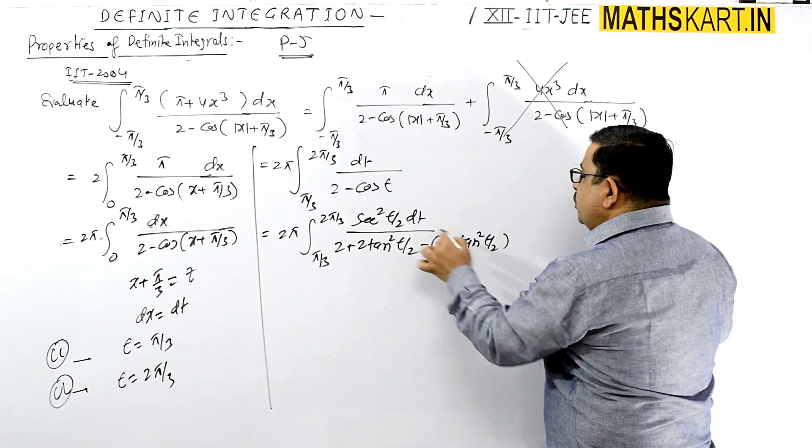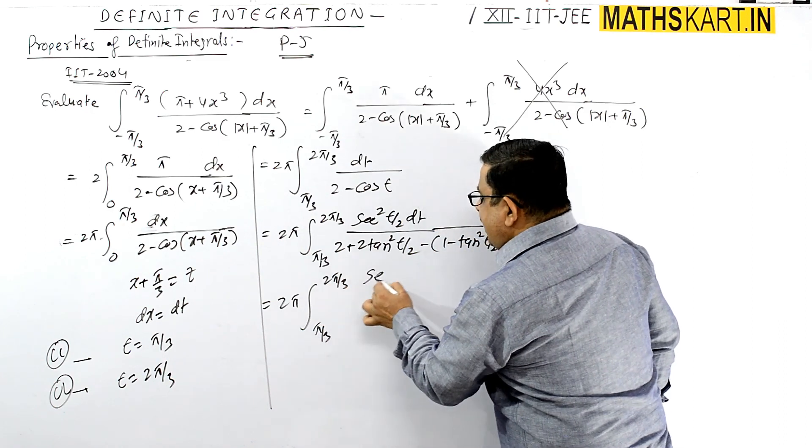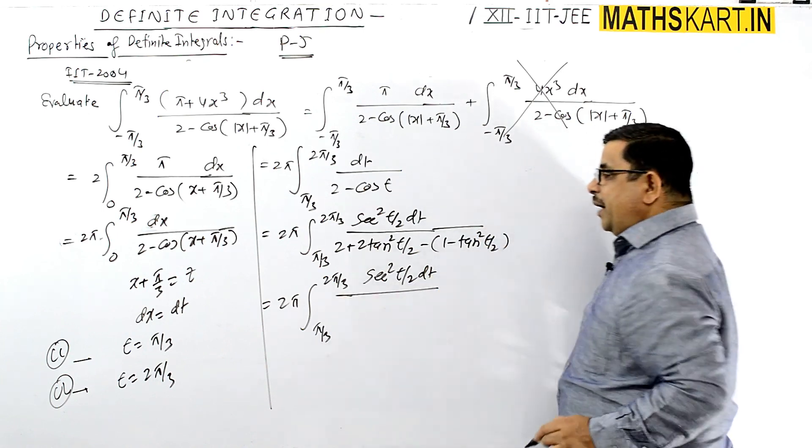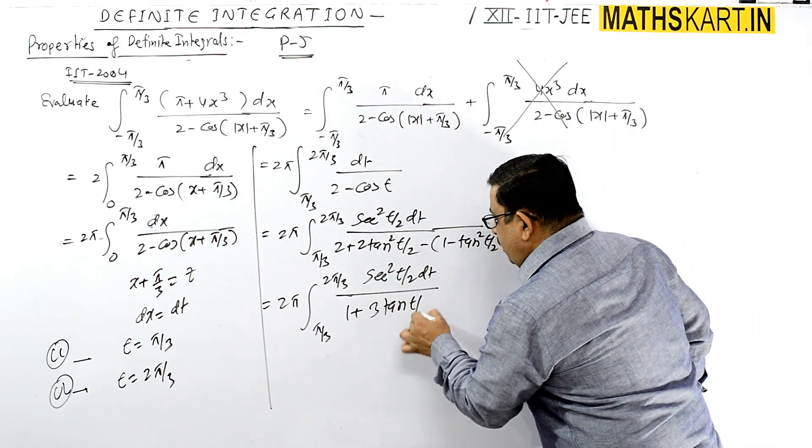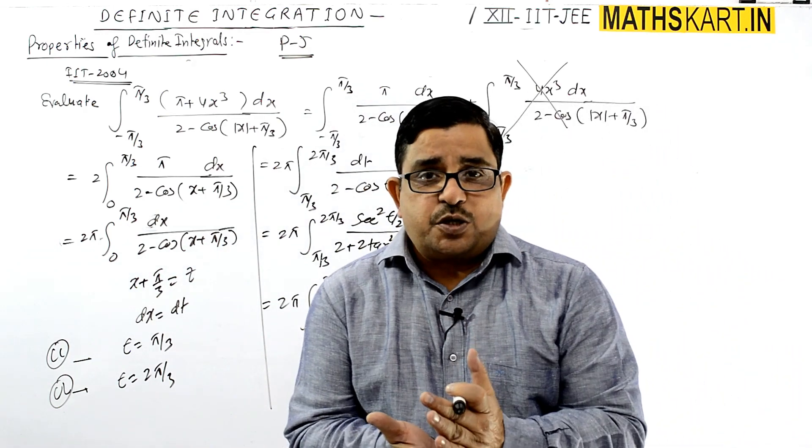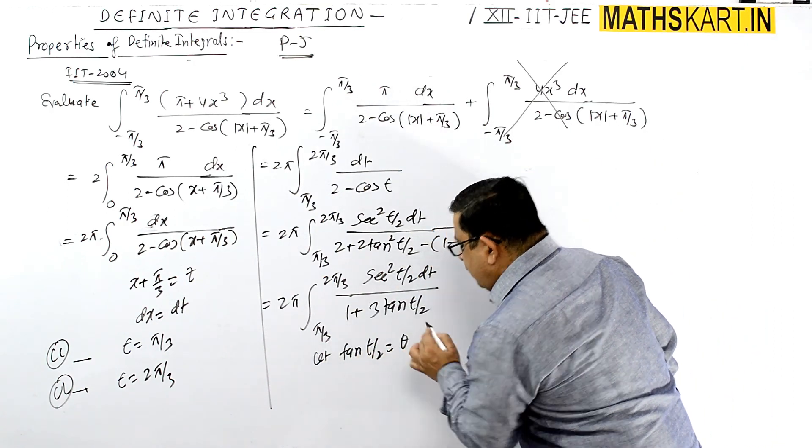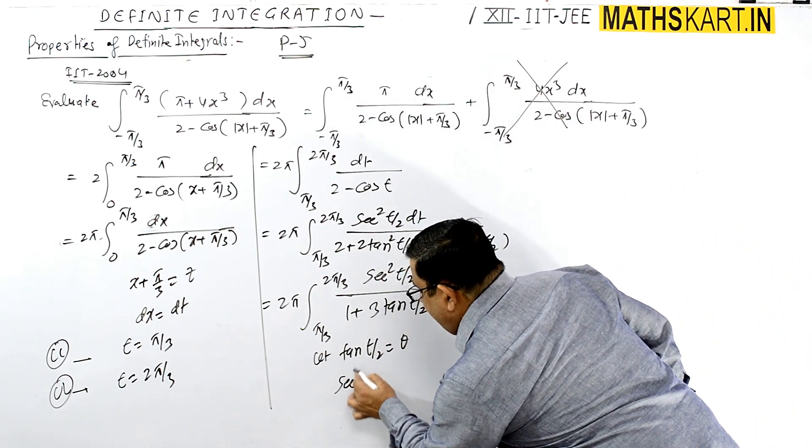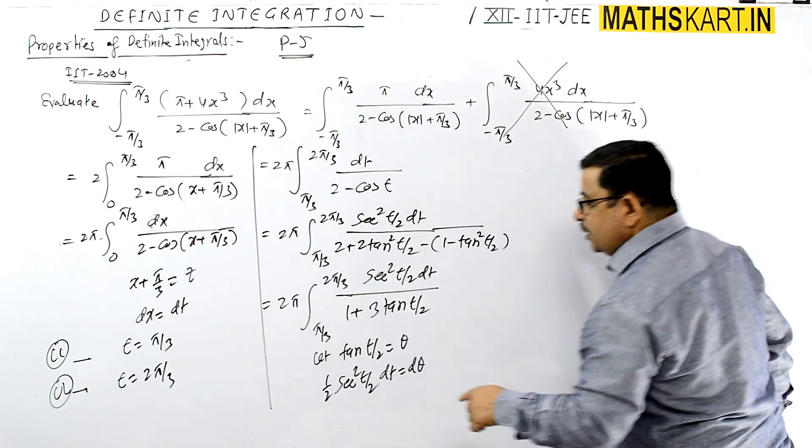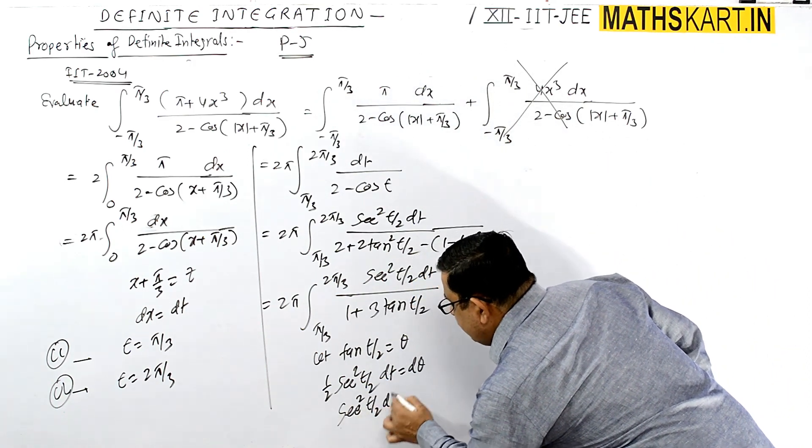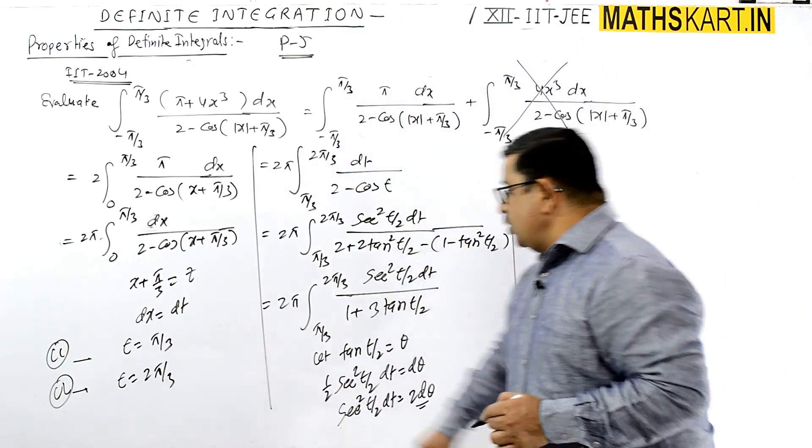Simplifying the denominator: 2 + 2tan²(t/2) - 1 + tan²(t/2) = 1 + 3tan²(t/2). So we have 2π from π/3 to 2π/3 of sec²(t/2) dt/(1 + 3tan²(t/2)). Now use a second substitution: let tan(t/2) = θ, so sec²(t/2) dt/2 = dθ, meaning sec²(t/2) dt = 2dθ. Change limits accordingly.